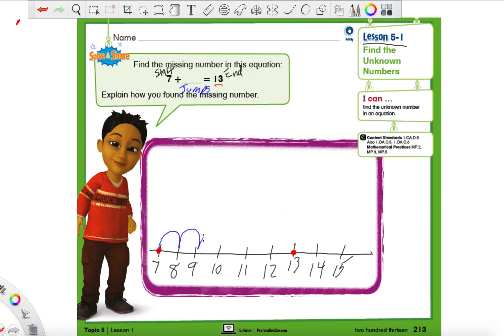So let's figure out our jump number that's right here in the middle. This is the one that we're missing, right? How many jumps it takes to get from 7 to 13. So let's go ahead and do that. 1, 2, 3, 4, 5, and 6. So it took me 6 jumps, so that means our missing number is 6. So 7 plus 6 equals 13.